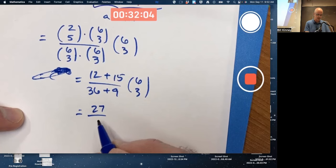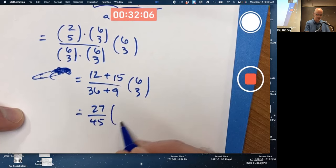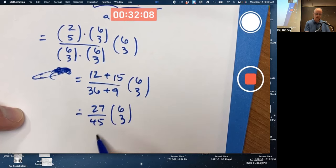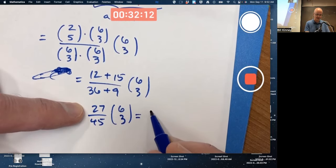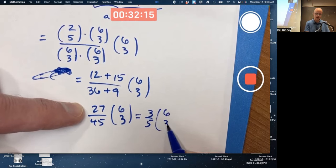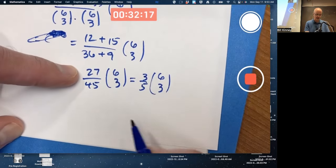Simplify. 27 over 45 times 6, 3. Both of those are divisible by 9. That's the same as 3 fifths times the vector 6, 3. That's the correct answer.